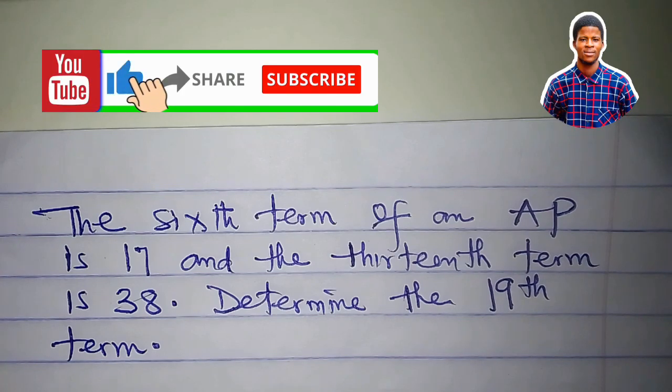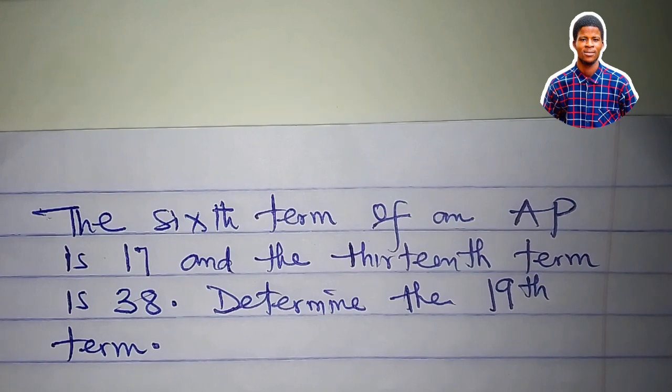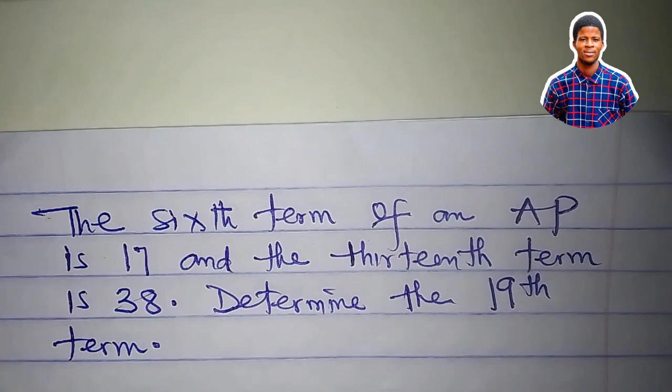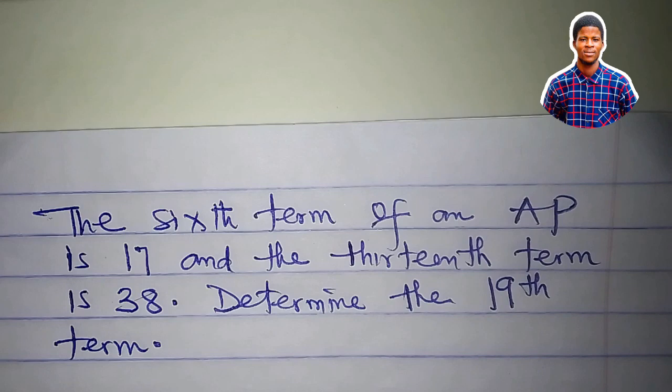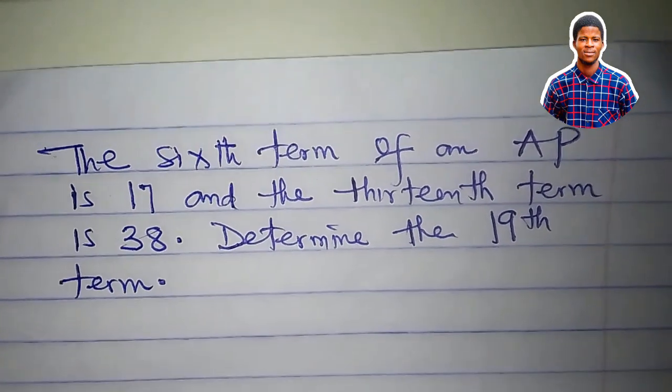Before us is a problem on linear sequence leading to simultaneous equation. The question says that the sixth term of an AP is 17 and the 13th term is 38. We are to determine the 19th term.